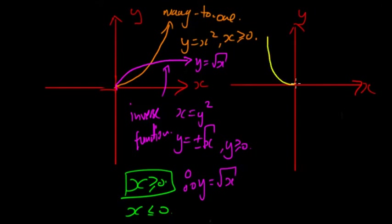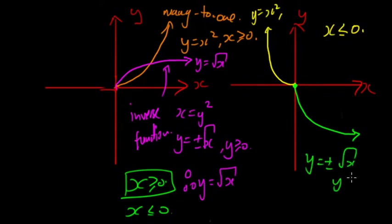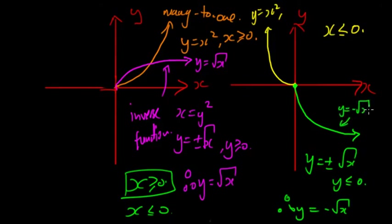What if we restrict the other way? We can set y = x² with x ≤ 0, making it one-to-one. So its inverse will also be a function, passing through the origin. Swapping x and y gives y = ±√x, but since y ≤ 0 at all points, y = -√x. So this value here is y = -√x, and it passes the vertical line test — it is now an inverse function.